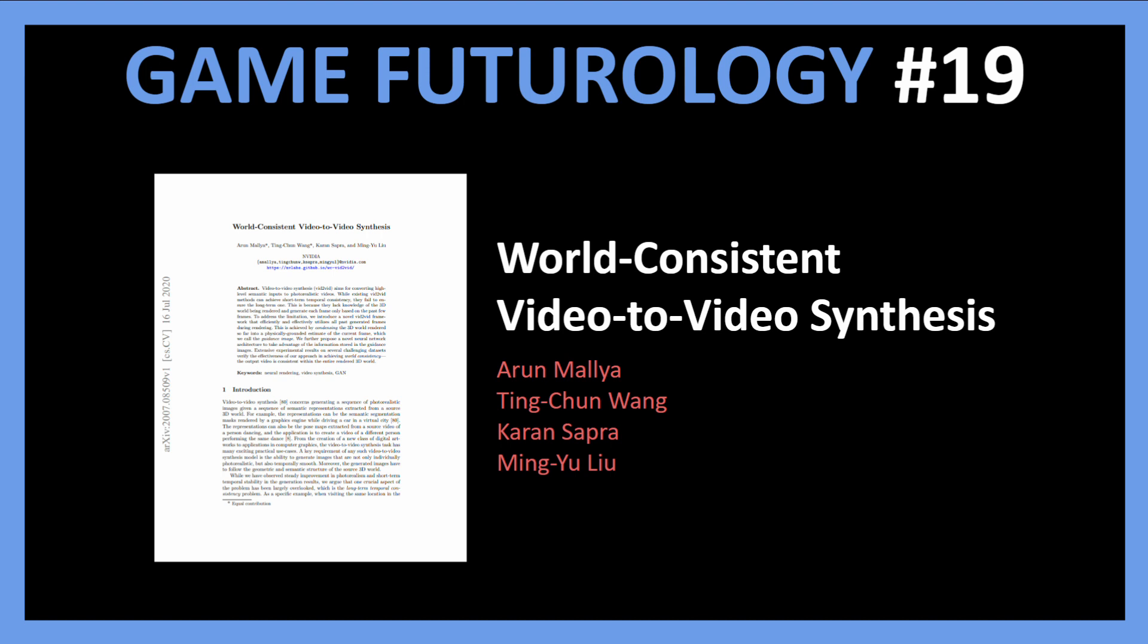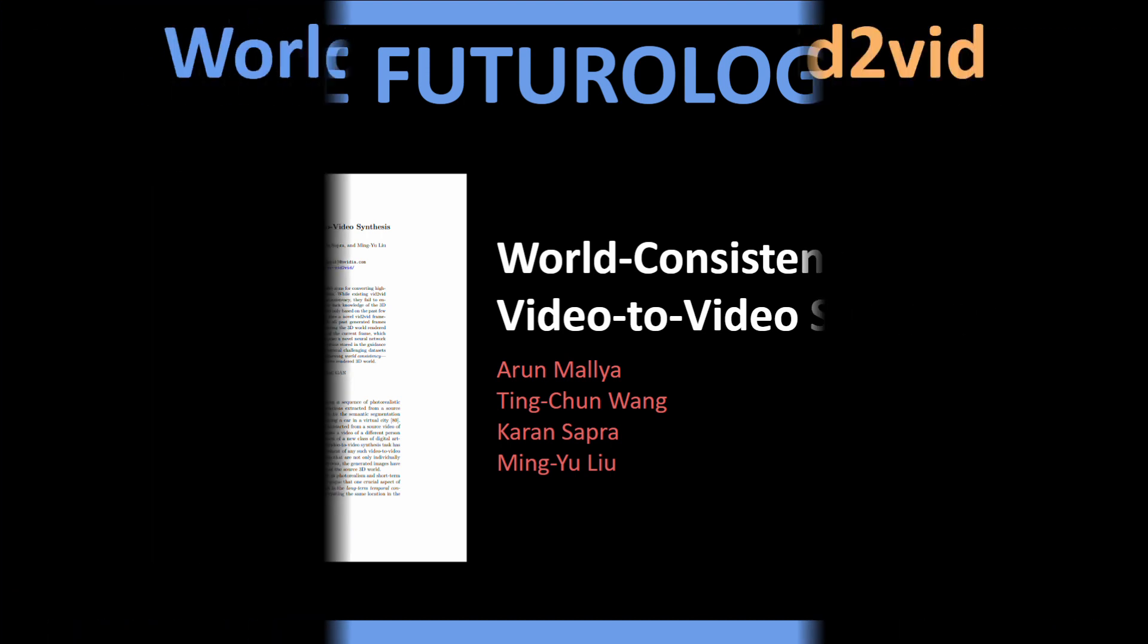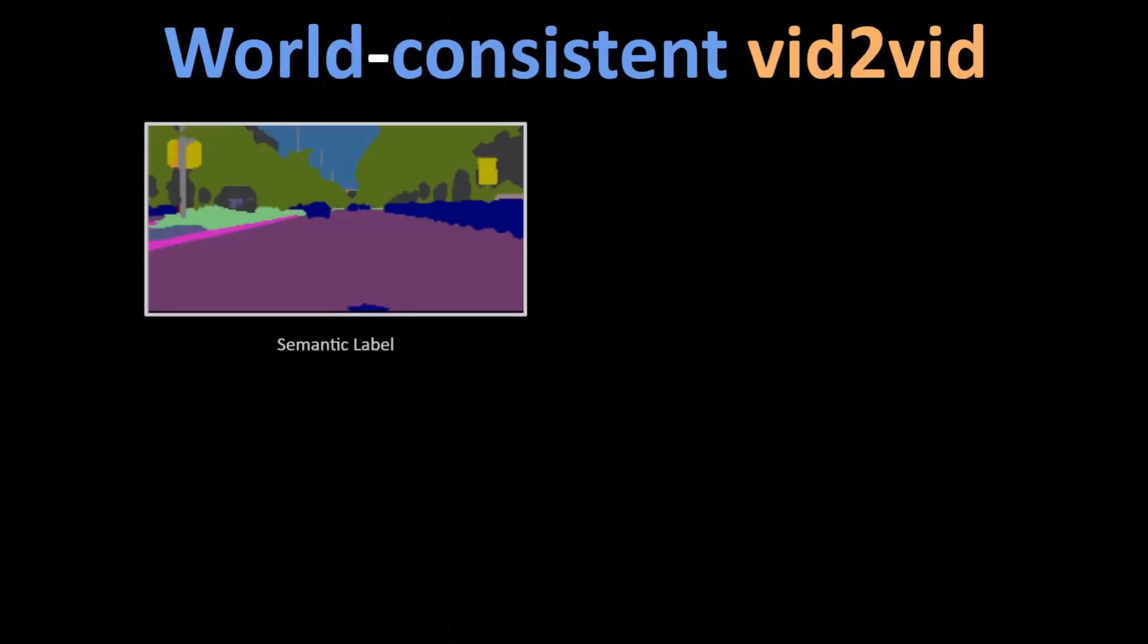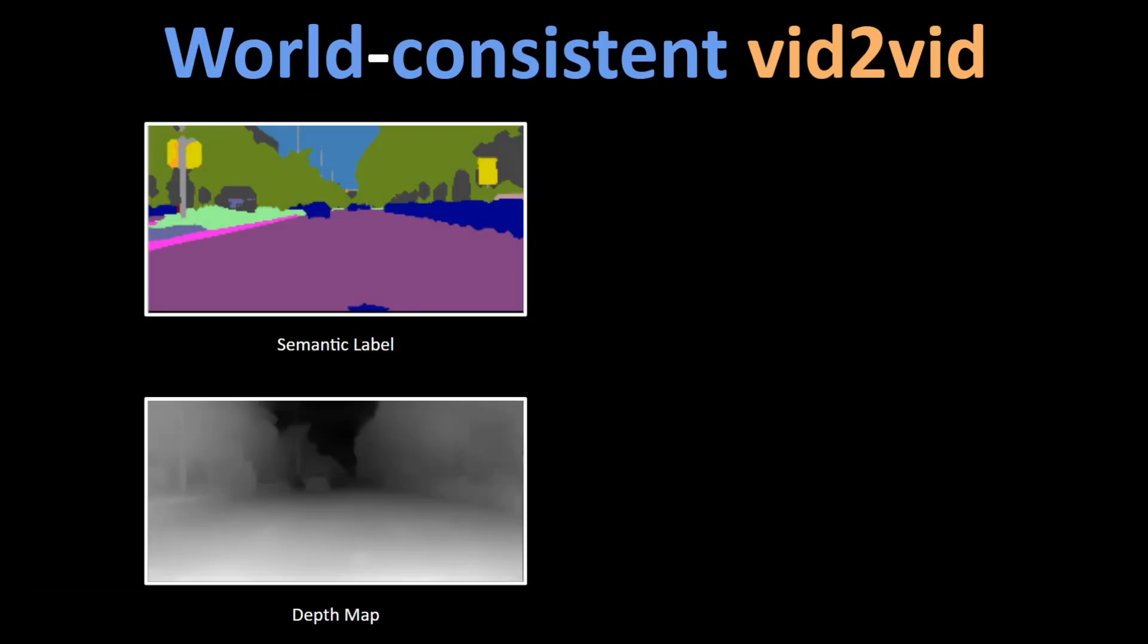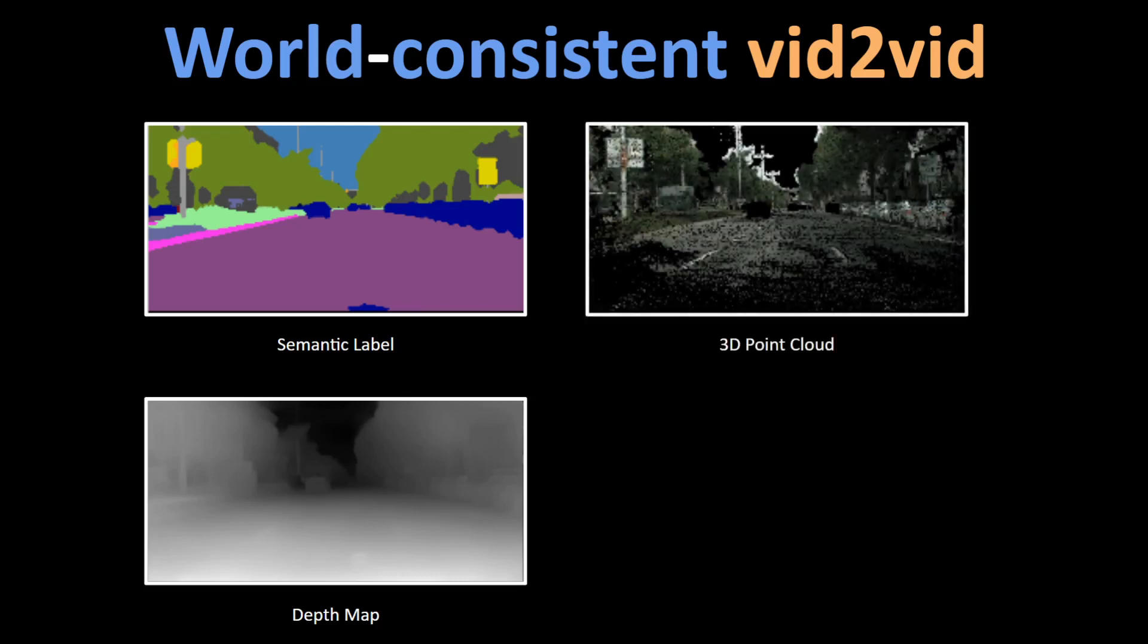World Consistent Video-to-Video Synthesis. This method uses additional information like depth maps along with the standard semantic labels and it introduces an additional input called the guidance image. This image basically creates a view of the scene with 3D point clouds and applies the rendered texture of the objects to these point clouds.